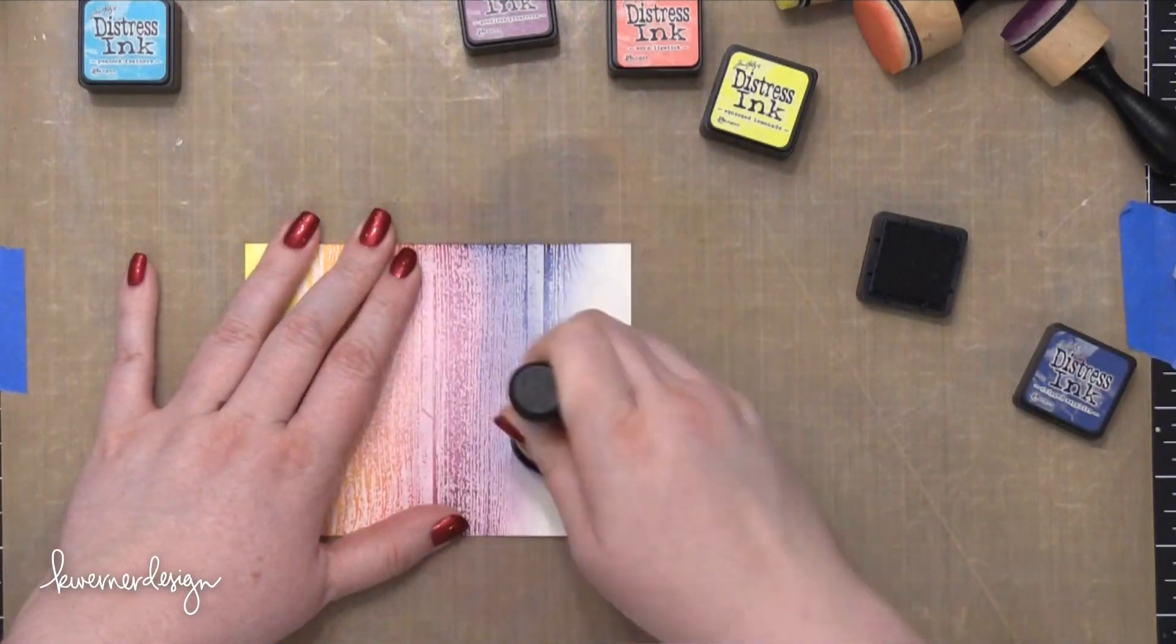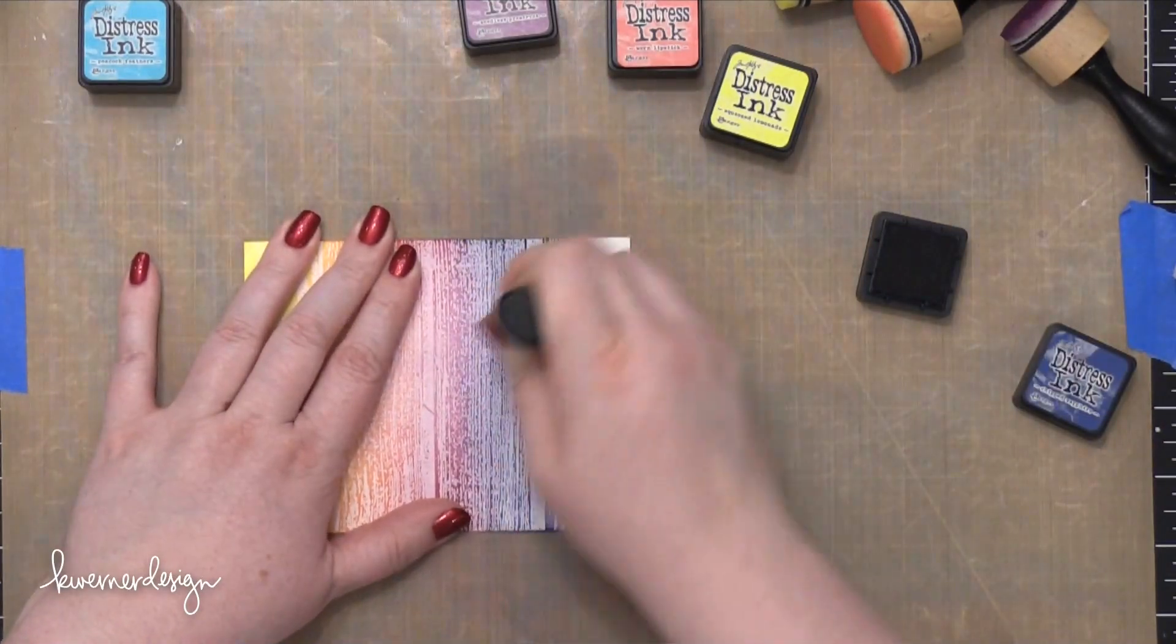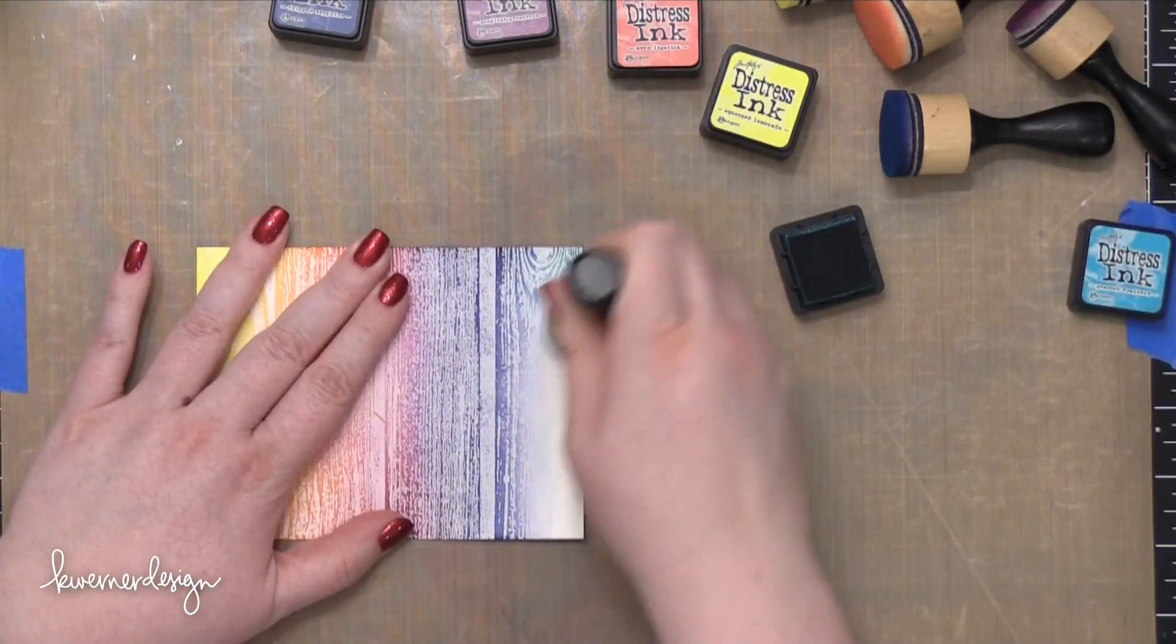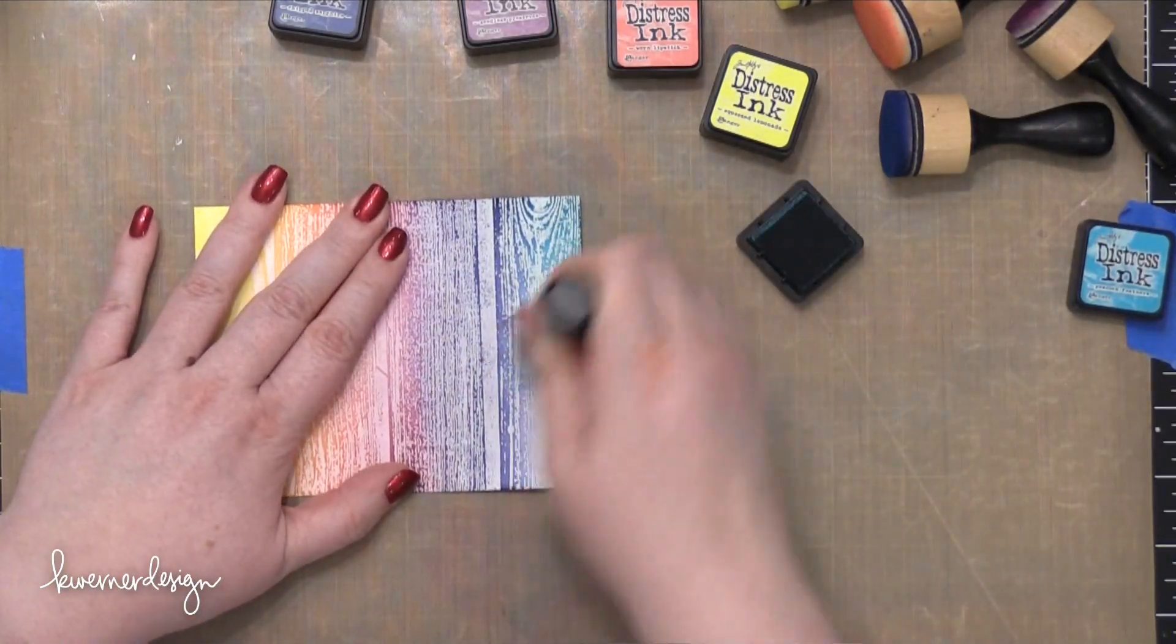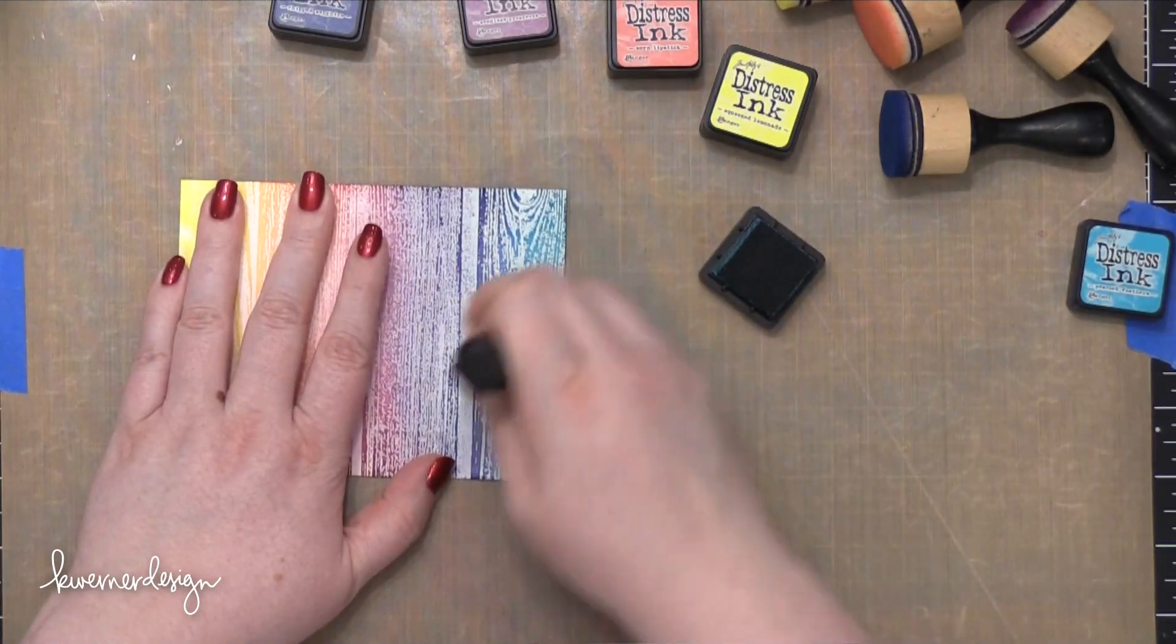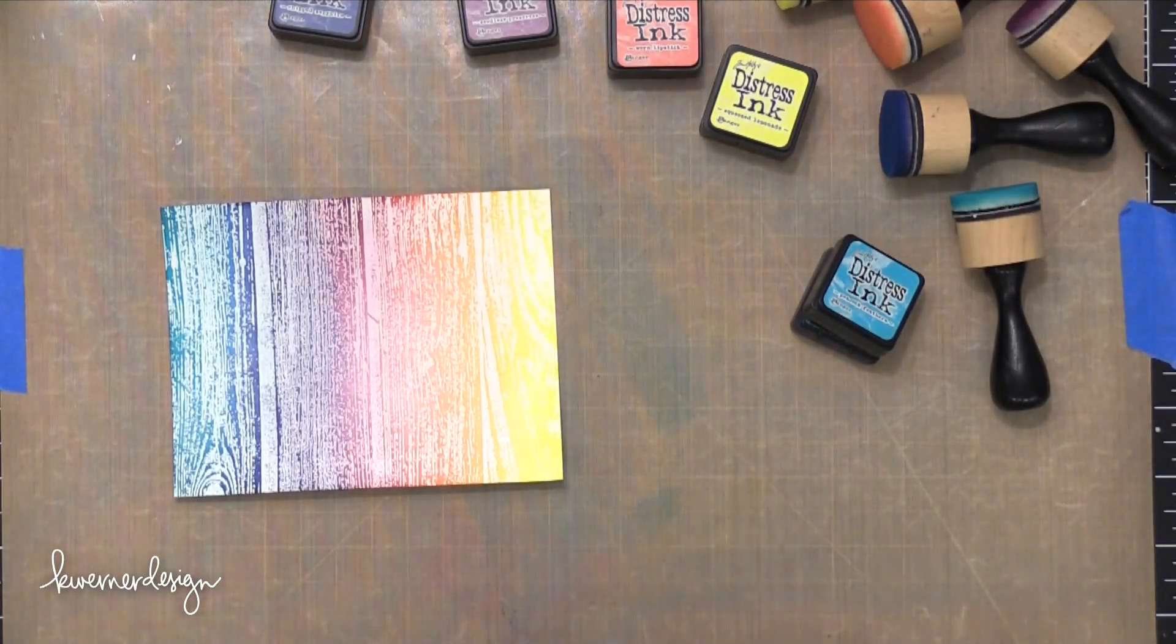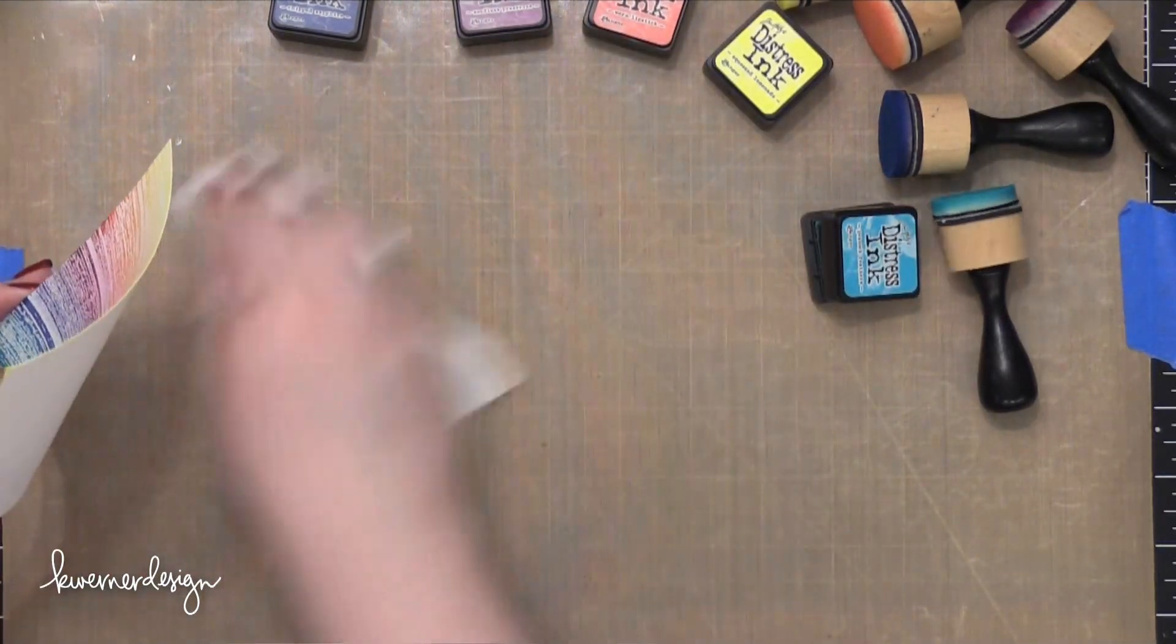I'm now using some Chipped Sapphire and Chipped Sapphire is sort of a purpley blue so it's a great transition color from purple to blue. Then the last color I'm using is Peacock Feathers. This is kind of the same deal where it's a little bit on the greenish side but it has blue so it will help transition those colors.